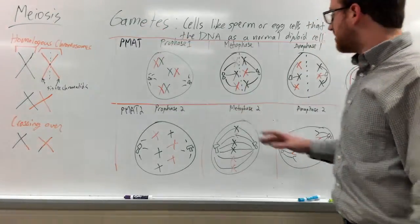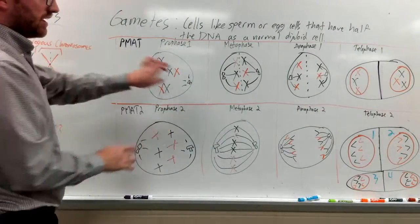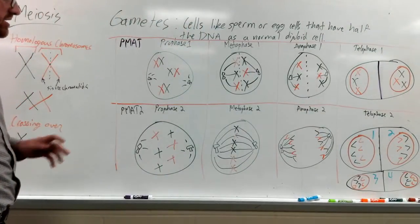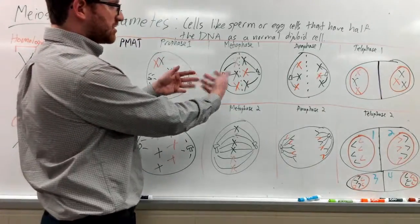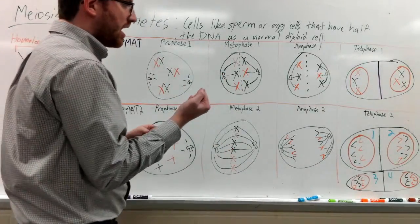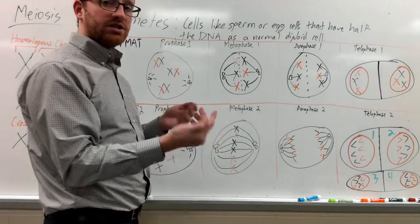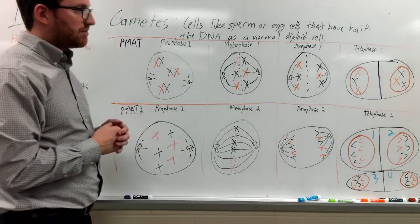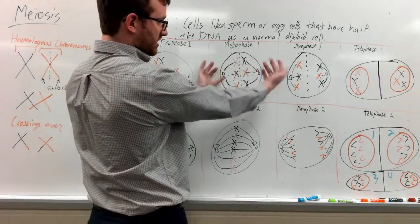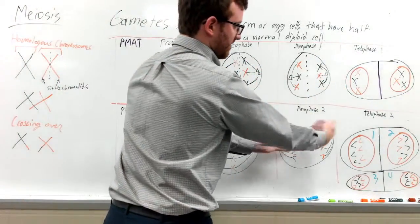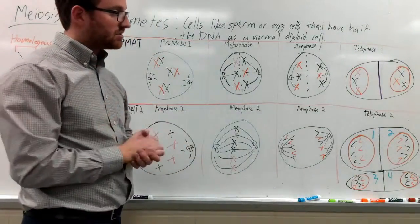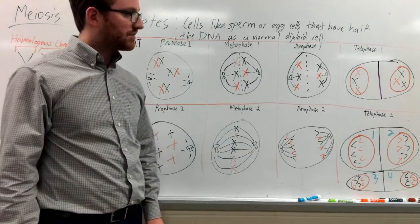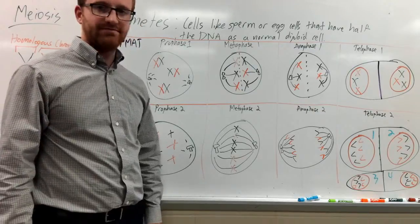These are all going to be gametes. So you started with one cell and ended up with four gametes. In mitosis, the chromosomes just split one time, which is why those cells still have the full amount of DNA. However, during meiosis, since the chromosomes split twice — there are two splittings during anaphase one and anaphase two — that double splitting is why you eventually get four cells, each with half the DNA of a normal diploid cell. Thanks for watching.